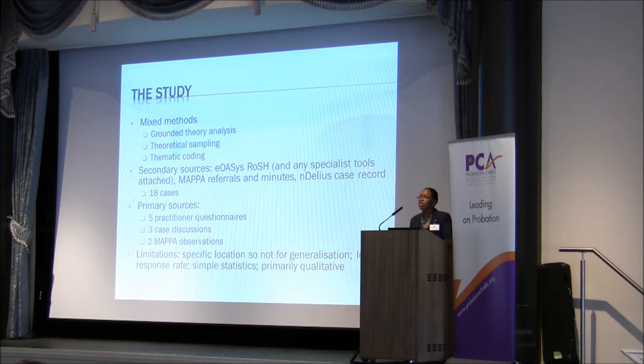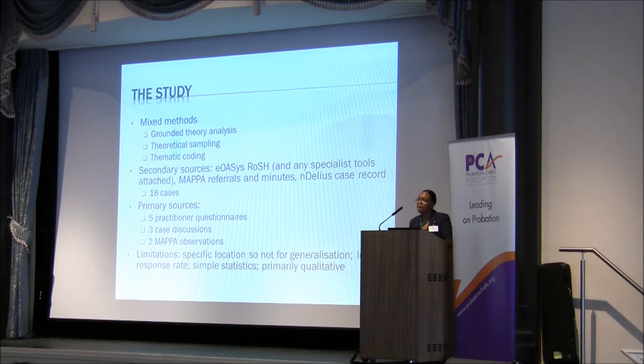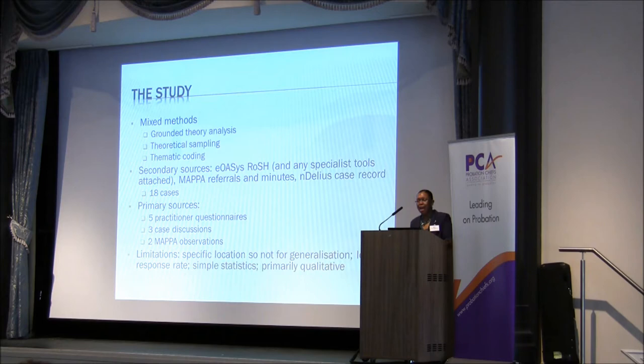In the end, 18 cases were identified. Primary sources included questionnaire responses from five practitioners, case discussions with three practitioners, and observation of two cases being discussed at MAPPA Level 2 meetings. There are many limitations: this study was carried out in a specific location and I'm not making any claims that these findings could be generalised. There was also a low response rate from practitioners — 36 offender managers were invited but only eight had an input. The analysis used simple statistics and it is primarily a small-scale qualitative study.